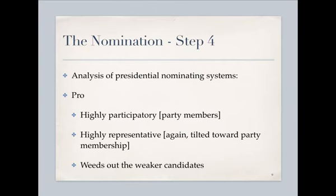So what's right and wrong with our presidential nominating systems? On the pro side, they're highly participatory, highly representative of the type of people that belong to that party, and they do weed out weaker candidates. In the Democratic primary video from lecture one, nobody showed up for Biden, Dodd, or Gravel — there's a reason for that: they didn't have much support. After Iowa, they were done. Dodd moved there and spent two years campaigning, but voters chose someone else.